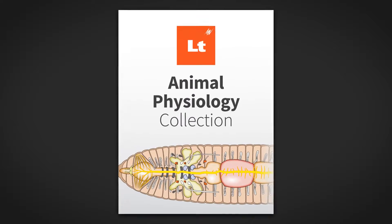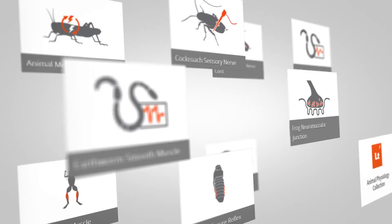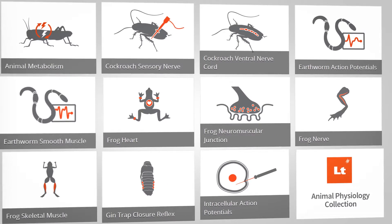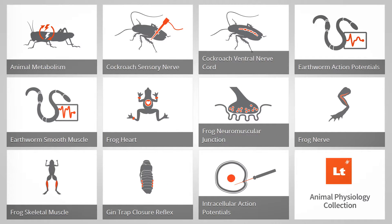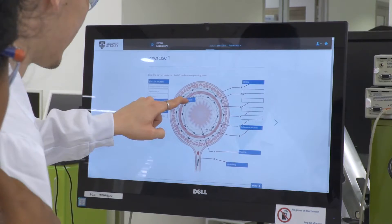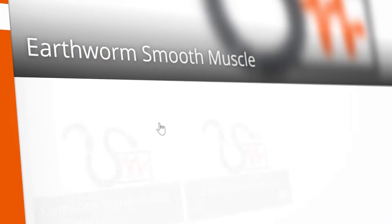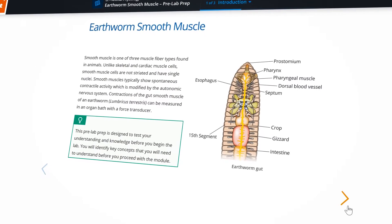LT's animal physiology collection comes complete with professionally designed lessons and labs, including common undergraduate insect, annelid, amphibian, and mammalian preparations. The collection guides students towards a better understanding of homeostatic processes and lets students investigate basic and applied concepts in neuro and muscle physiology.